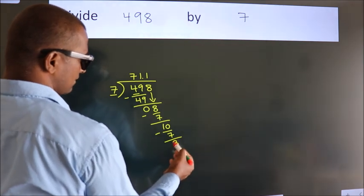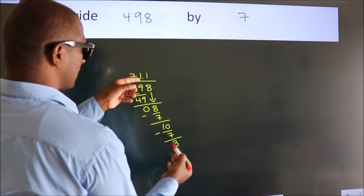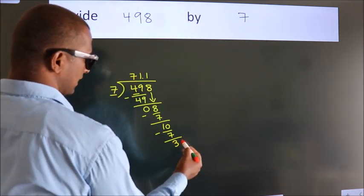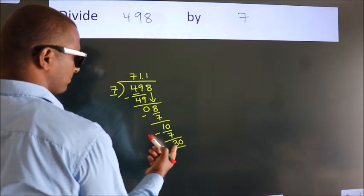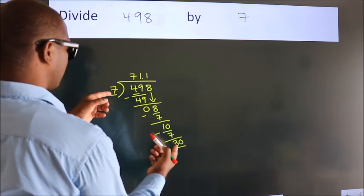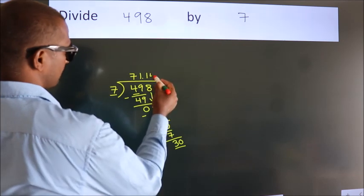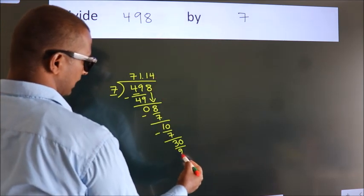After this, we already have the decimal, so directly take 0, making 30. A number close to 30 in 7 table is 7 4s, 28.